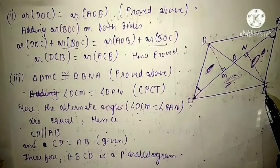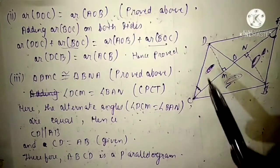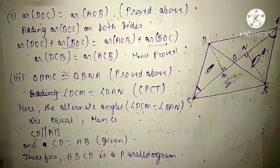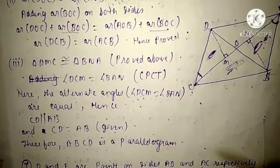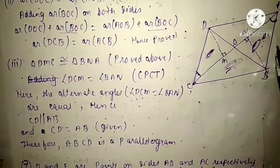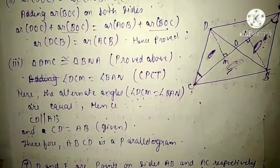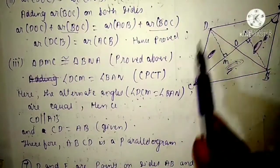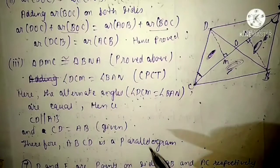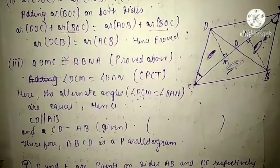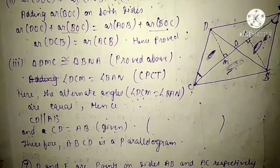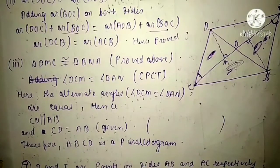It is given to us that CD equals AB. Since one pair of opposite sides are both equal and parallel, we can say that ABCD is a parallelogram. Therefore ABCD is a parallelogram. So our sixth question is completed.